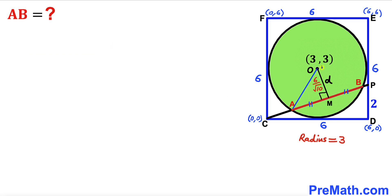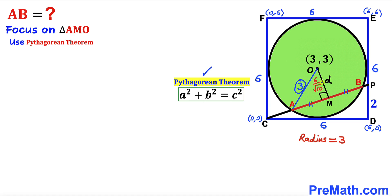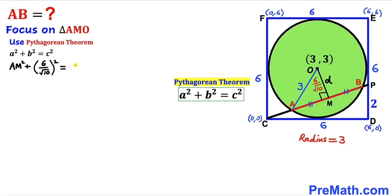In the next step, I connect center O with point A, forming right triangle AMO. The side AO is the radius of the green circle, so it equals 3 units. Applying the Pythagorean theorem a² + b² = c²: the hypotenuse is 3, the two legs are 6/√10 and AM. So AM² plus (6/√10)² equals 3².